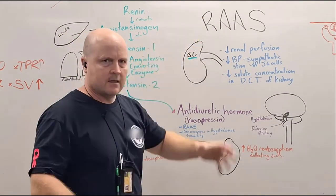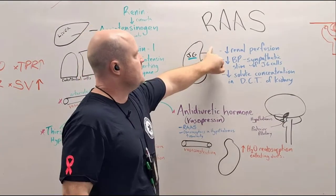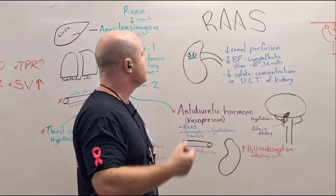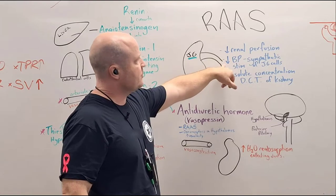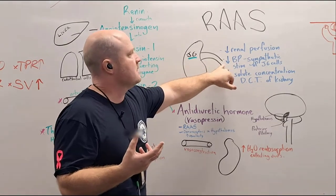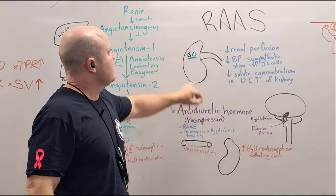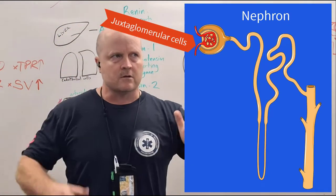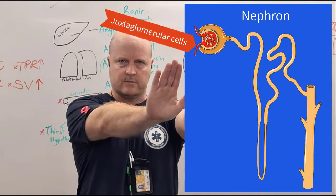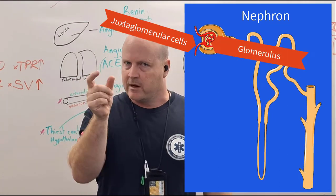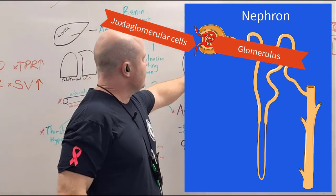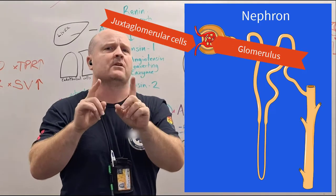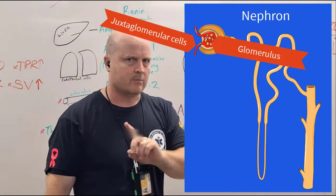Starting with RAS, the things that stimulate it include decreased renal perfusion — less blood flowing into the kidney is going to stimulate a response. Also, if our blood pressure is dropping, our sympathetic nervous system is going to directly send a message to our juxtaglomerular cells of our kidneys. Juxta means sit beside — like juxtapose — and glomerular, because the glomerulus is the start of the filter in the kidney. Our juxtaglomerular cells sit beside the glomerulus, so they're in a good position to sense what's happening with the blood pressure.